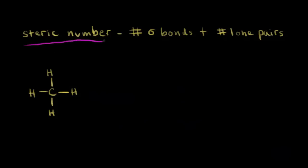The concept of steric number is very useful because it tells us the number of hybridized orbitals that we have. To find the steric number, you add up the number of sigma bonds, or single bonds, and to that you add the number of lone pairs of electrons.